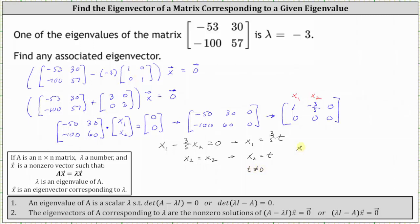So vector x, the set of eigenvectors, are all the vectors in the form of t times the vector three-fifths, one. Again, as long as t can't equal zero. Or if we want to clear the fraction of three-fifths, we could let s equal five t.